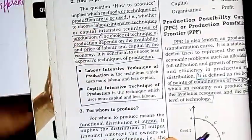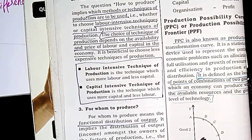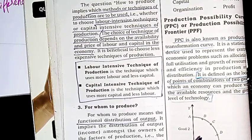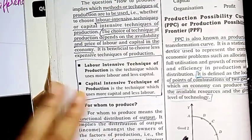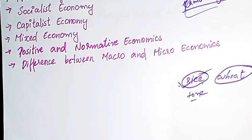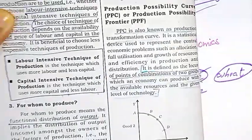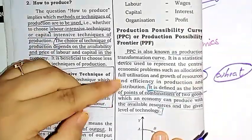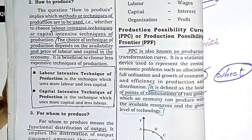For whom to produce — we decide what to produce and the profit or output from this production. That is what we mean by for whom to produce. The next topic we add is PPC and PPF — the Production Possibility Curve and Production Possibility Frontier.